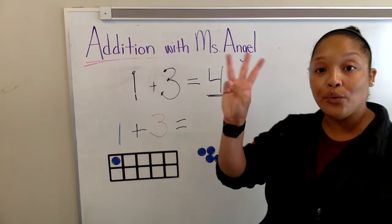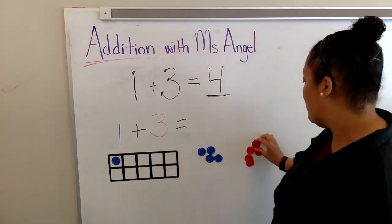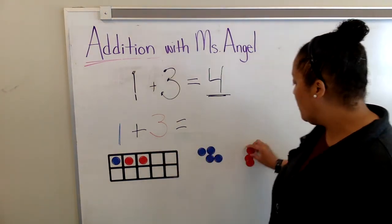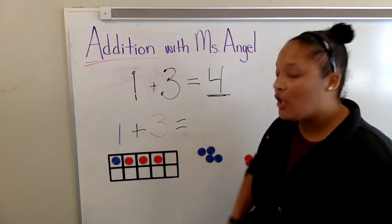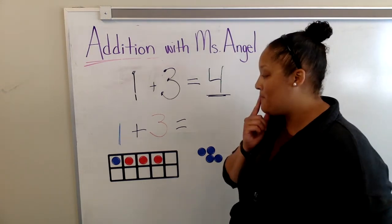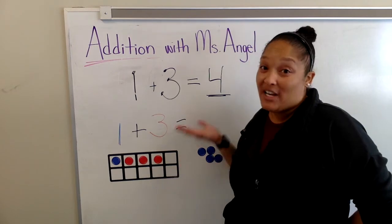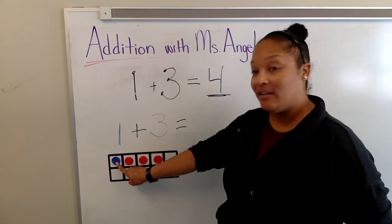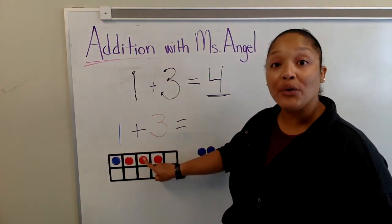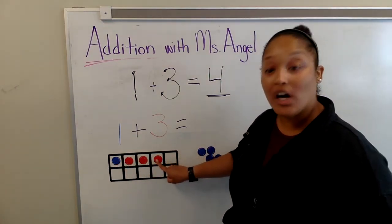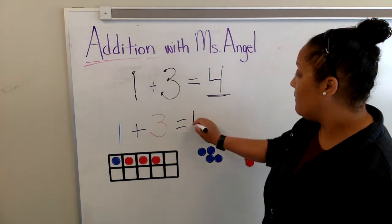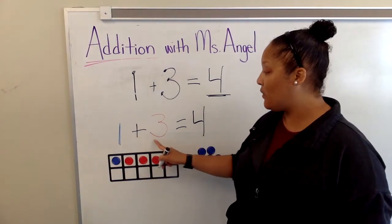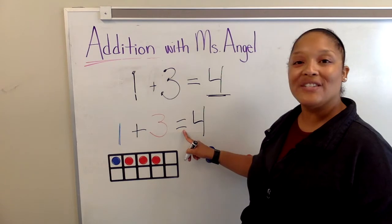I need to add three red circles: one, two, three. Now maybe you already know that number, or we can count again: one, two, three, four. The total is four. One plus three equals four.